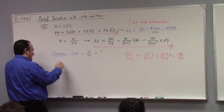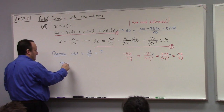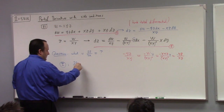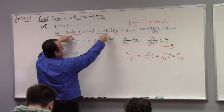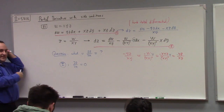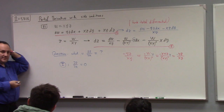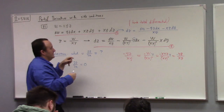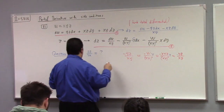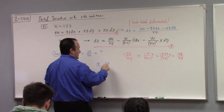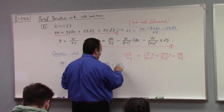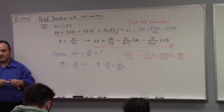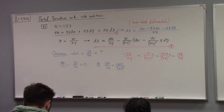So up here, from the perspective of equation one, I would say that partial Z over partial X is equal to zero — because when I write this, I'm thinking of X, Y, and Z as independent variables. So partial Z over partial X is zero if Z and X are independent variables. But on the other hand, if I look at either the blue equation or equation two, what does two tell me? Two tells me partial Z over partial X is minus WY over XY².